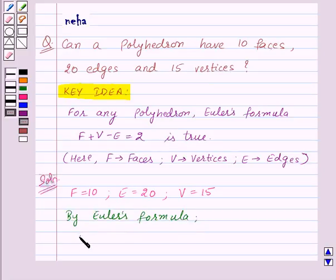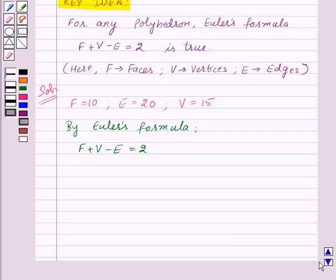Now let us substitute the values in the left hand side, that is F plus V minus E. So LHS will be equal to F, that is 10, plus V, that is 15, minus E, that is 20, and this equals 5. Now RHS is equal to 2.